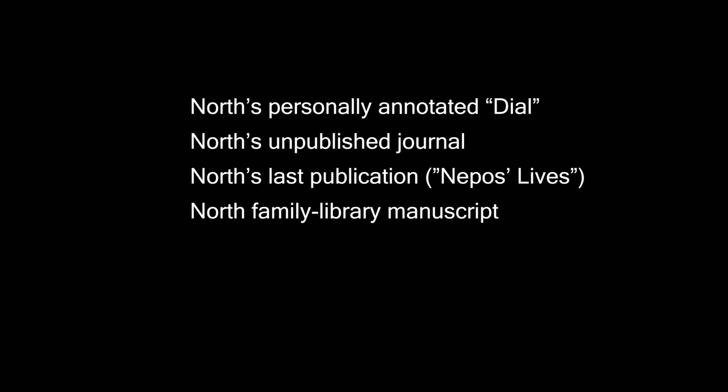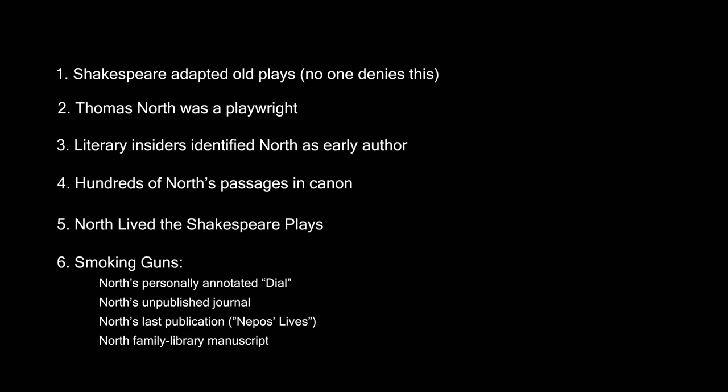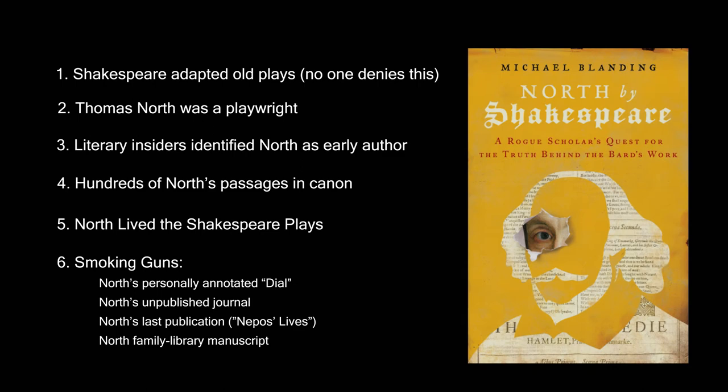These are just some of the smoking guns — three personal texts of North and a fourth, a North family manuscript, all of which were accessible only to Thomas, and all of them were important sources for the plays. The conclusion will summarize this evidence, stressing that yes, Shakespeare did indeed adapt earlier plays, that Thomas North is the one that literary insiders identified as the author of Shakespeare's old plays, Thomas North's passages and his life are found throughout the plays, and as his journal, his marginal notes, and other smoking guns confirm, Thomas North is the only one who could possibly have written these early plays.